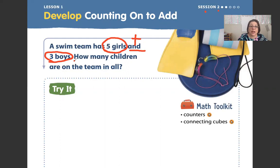Here's my question word: how. Let's spell the word how. H-O-W. Do it again: H-O-W. How? How many children are on the team in all? There's my question mark, okay?